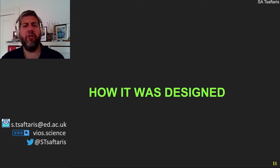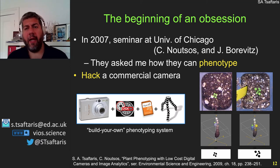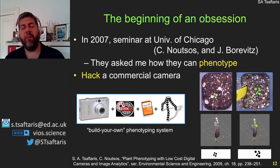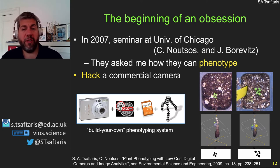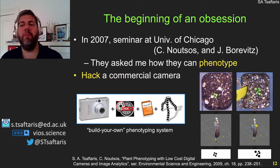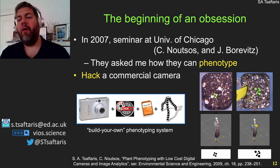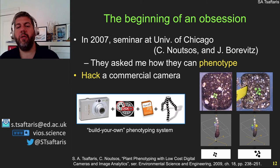This started as an obsession. In 2007, I gave a seminar at the University of Chicago. Plant biologists asked me how they could phenotype in an affordable manner. At that point, I owned a Canon camera and suggested using it as an intervalometer — hooking it up to image plants and doing simple analysis to extract mass measurements of Arabidopsis. We then submitted our first paper in 2009 on using this simple, low-cost approach to plant phenotyping.